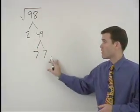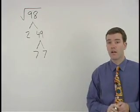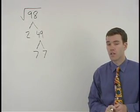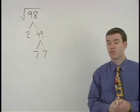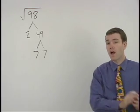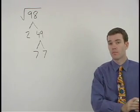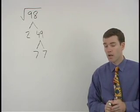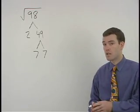What we're looking for in our factor tree are pairs of factors that are the same. If a factor pairs up then it will come out of the radical. If a factor does not pair up then it stays inside the radical.